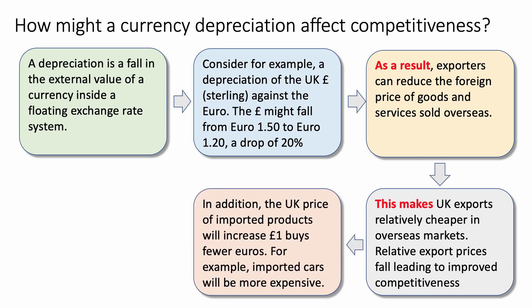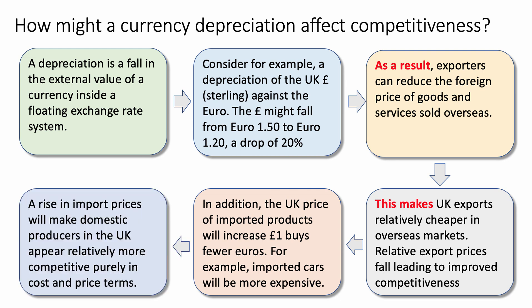In addition, a second round effect is that the UK price of anything imported from the European Union — from Eurozone countries — will increase, since one pound now buys fewer euros. Imported cement, steel, and wheat might be more expensive, as might imported cars and other capital items. A rise in import prices then makes domestic suppliers in the UK appear relatively more competitive, purely in cost and price terms.